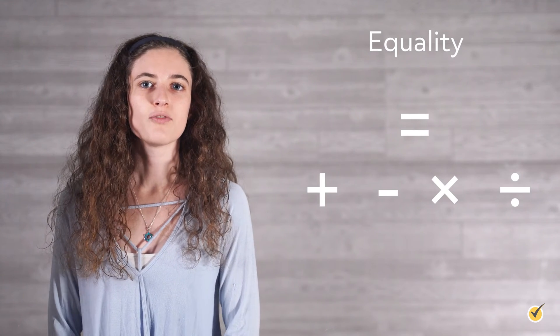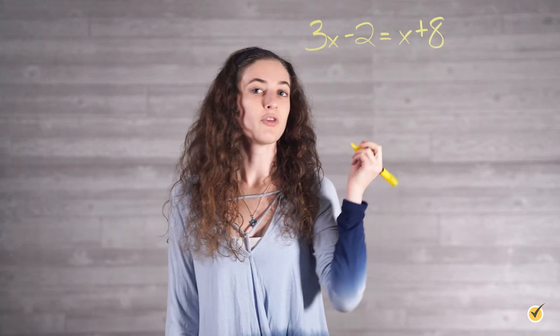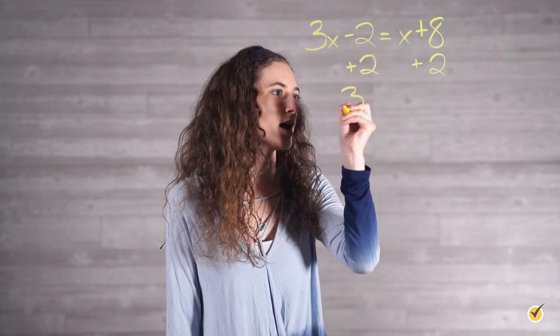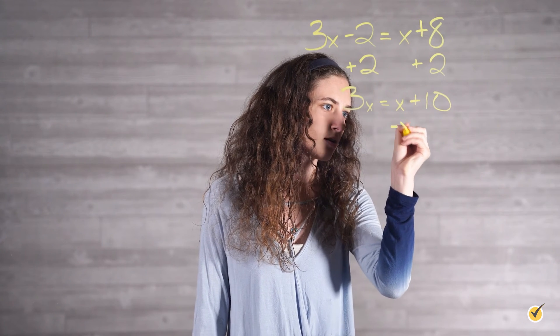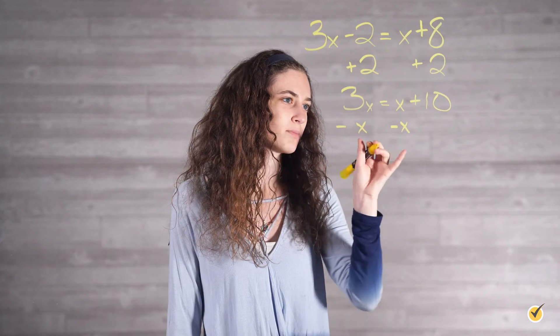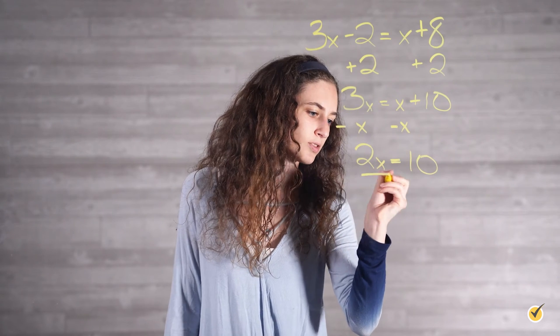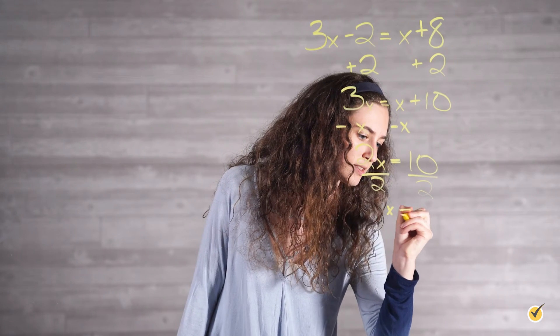For a quick review, let's look at the following example. Solve the equation for x: 3x minus 2 equals x plus 8. First, we want to get our variables on one side and our constants on the other, so I'm going to add 2 to both sides. That gives us 3x equals x plus 10. Then I'm going to subtract x from both sides, because you want to do the same thing on both sides. That gives us 2x equals 10. And then to get x by itself, divide by 2 on both sides, which gives us x equals 5.